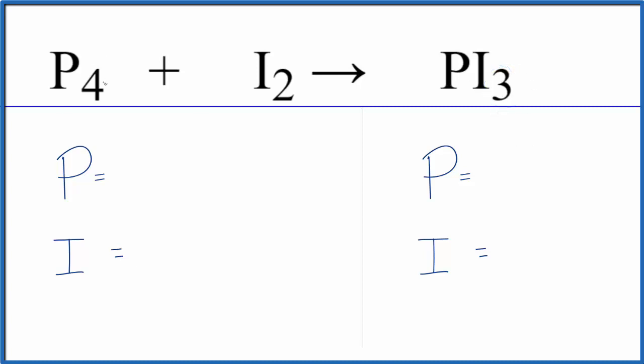So to balance the equation, we'll count the atoms up. Four of these phosphorous atoms, two iodine atoms, over here in the products one phosphorous and three iodine atoms.